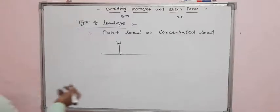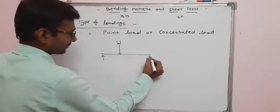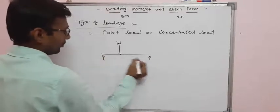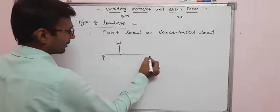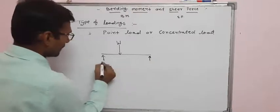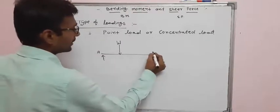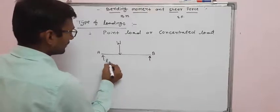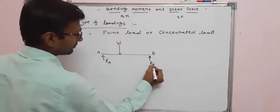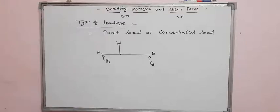For example, this is a simply supported beam with supports at A and B, and reactions RA and RB are applied at those points. A point load W acts at a particular point on the beam.